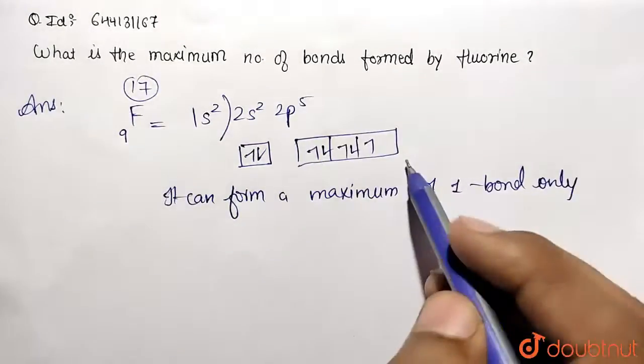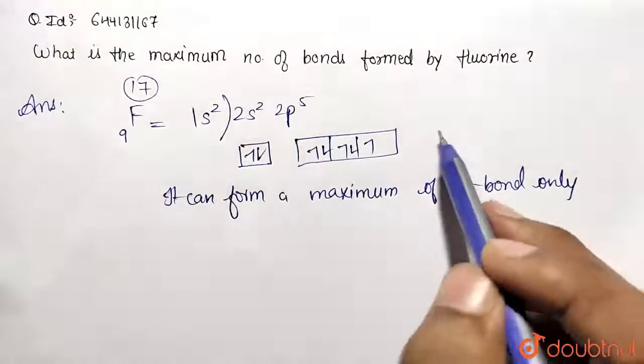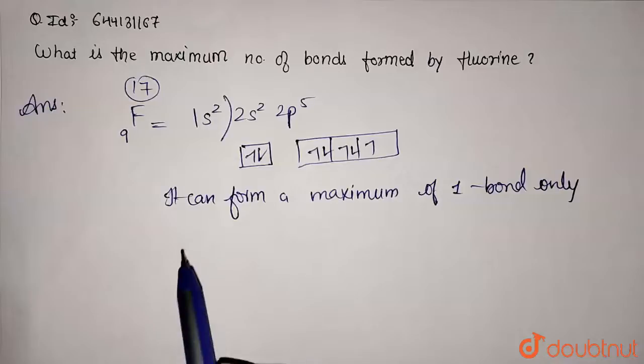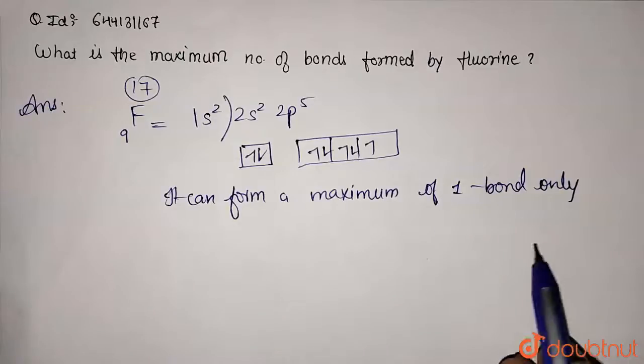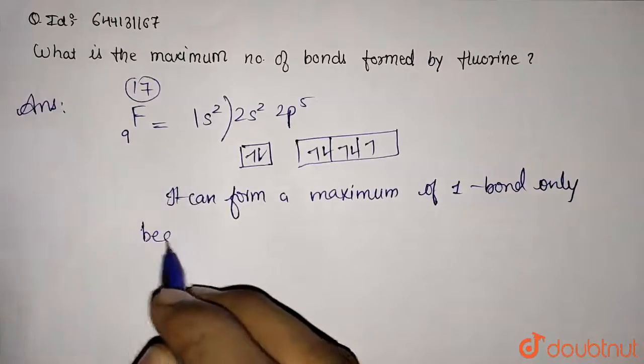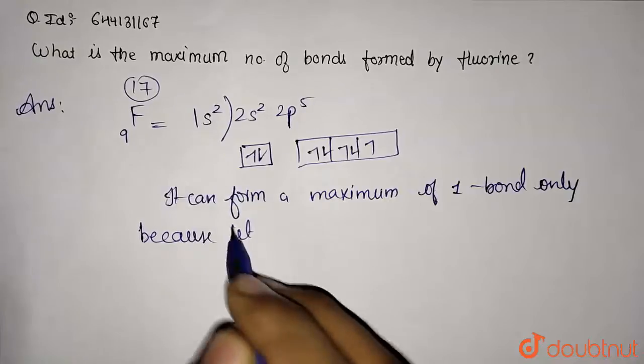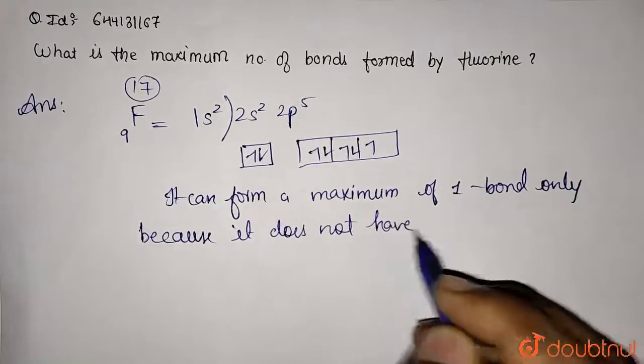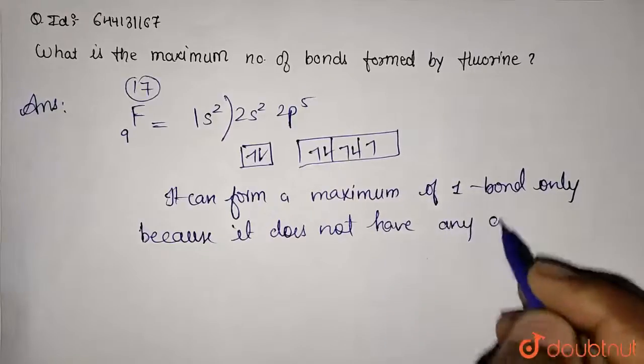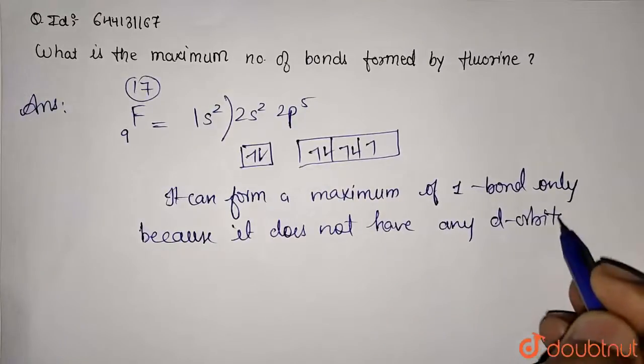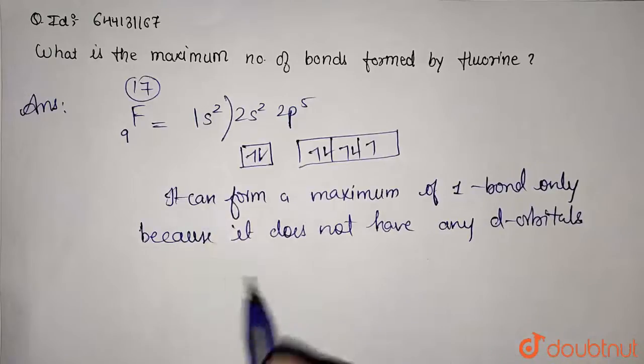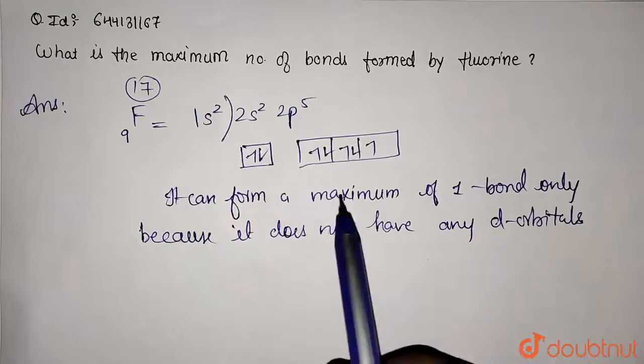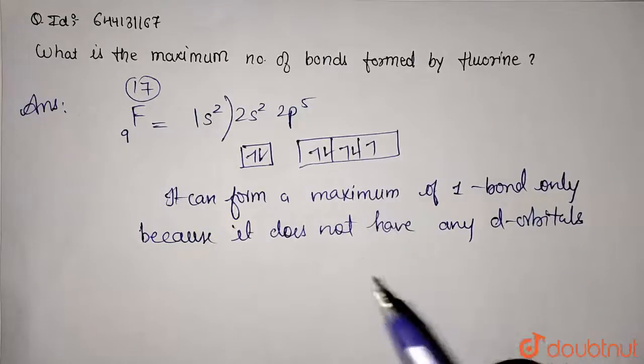Why? The reason is because it does not have any d orbital to expand its covalency. It can form a maximum of 1 bond only because it does not have any d orbital. Because it is from the second period element, it can form only a maximum of 1 bond to complete its octet.